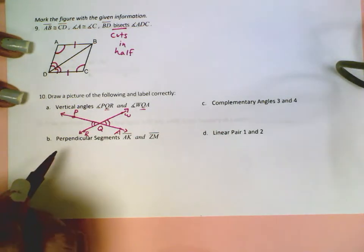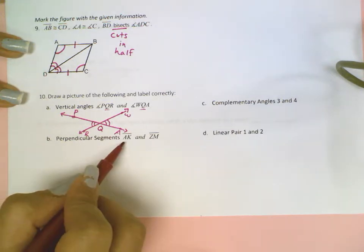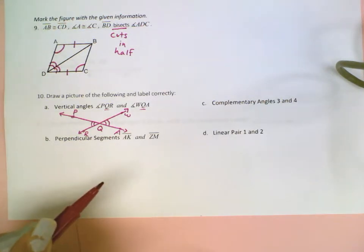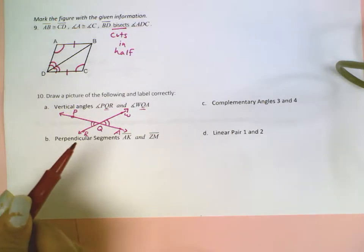For B, it says perpendicular segments AK and ZM. So when we're talking about perpendicular segments, perpendicular is the key word here. Perpendicular is when two segments, lines, or rays come together and create right angles.